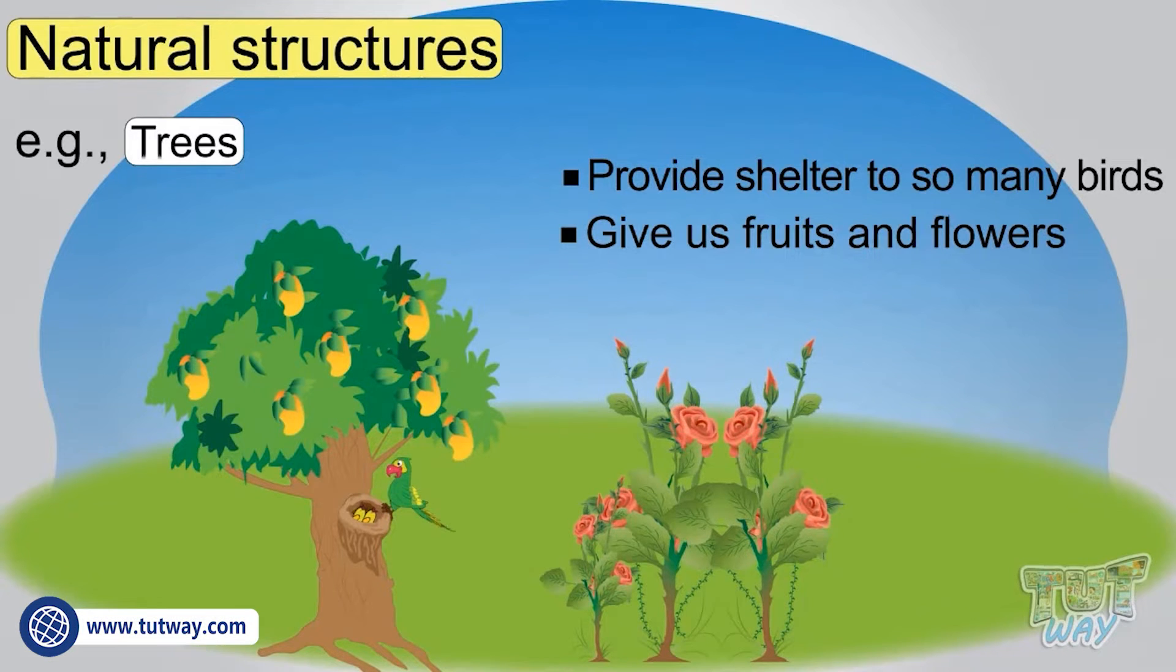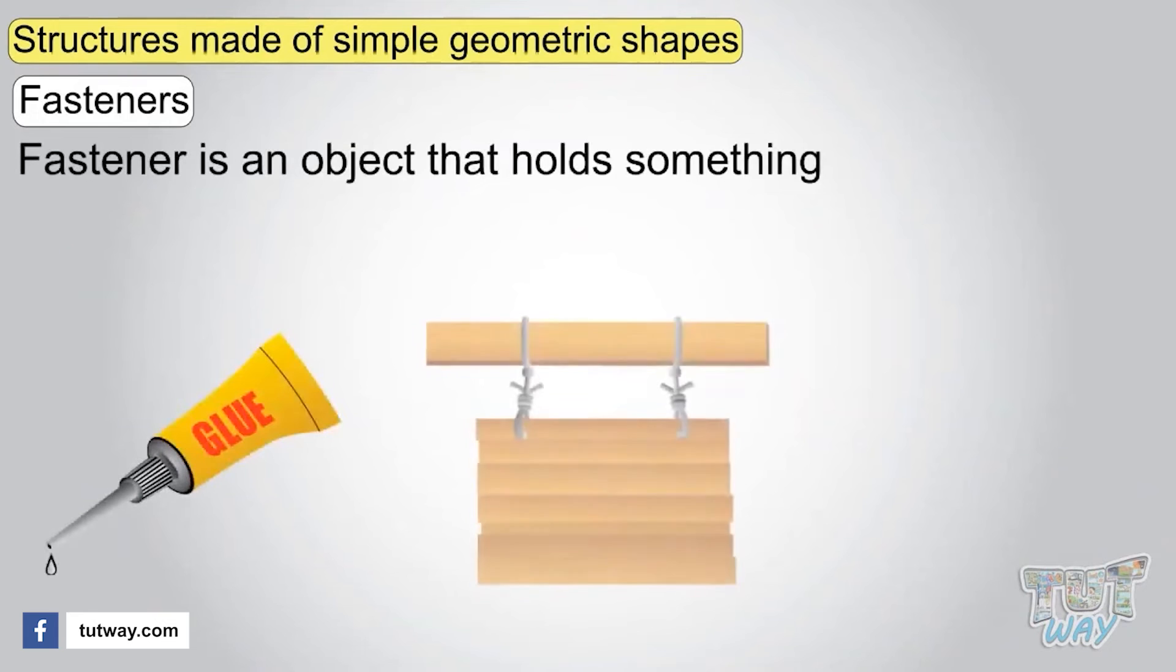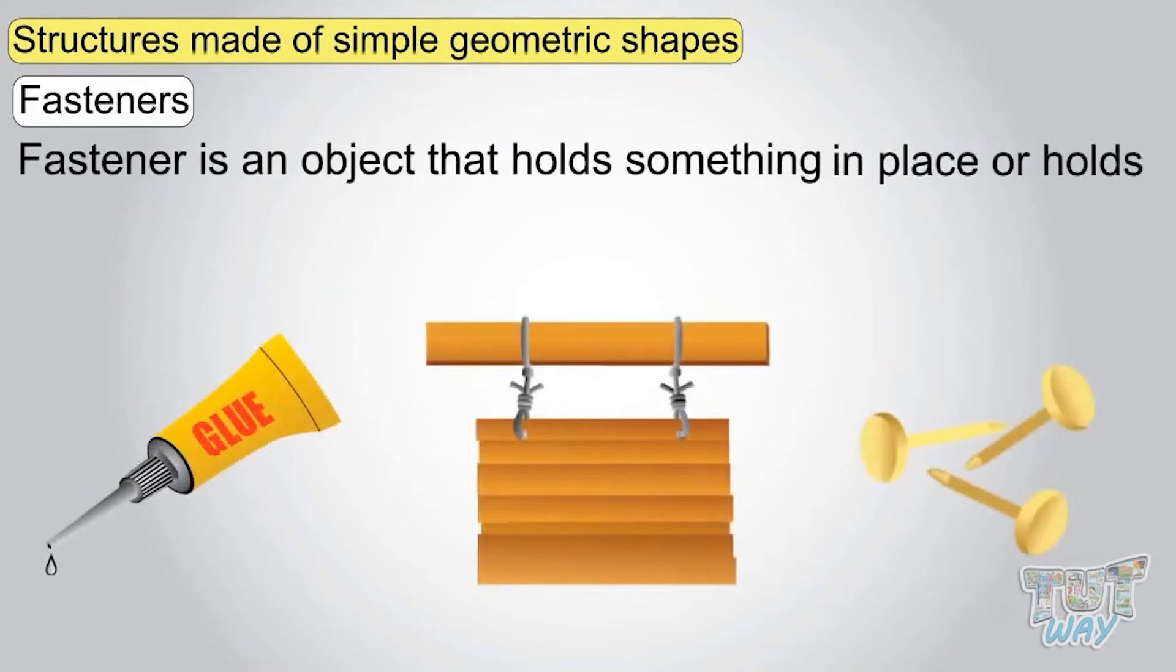Many structures are made of simple geometric shapes like fasteners. Fastener is an object that holds something in place or holds two things together. Example,